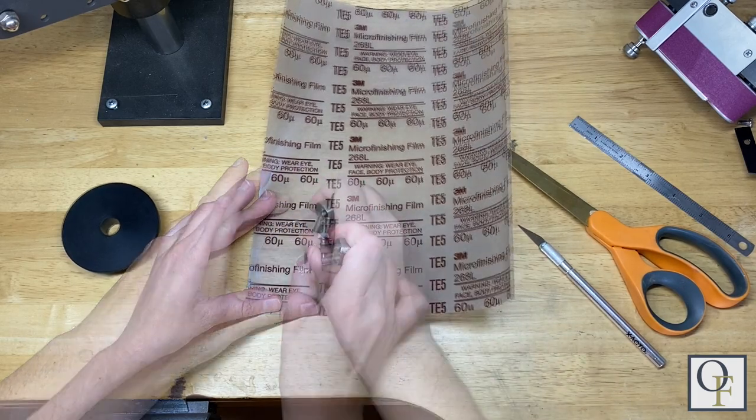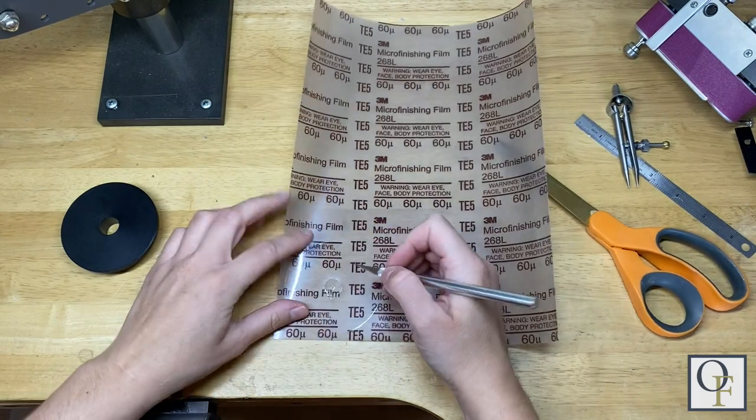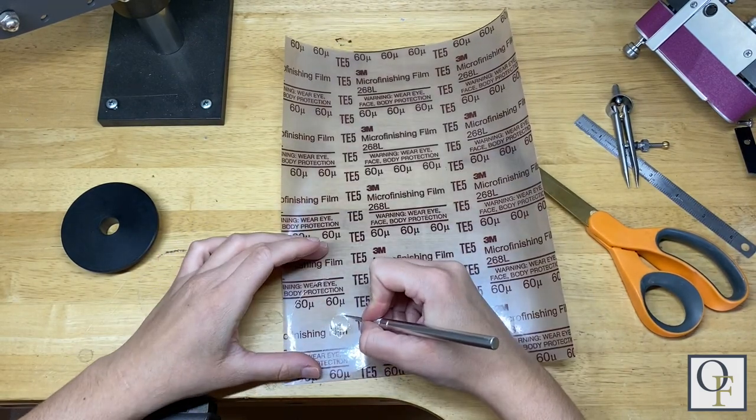For the small center hole I find it difficult to cut with scissors so I like to use an exacto knife. This is much easier to control the small area.